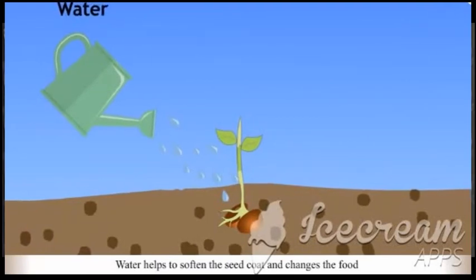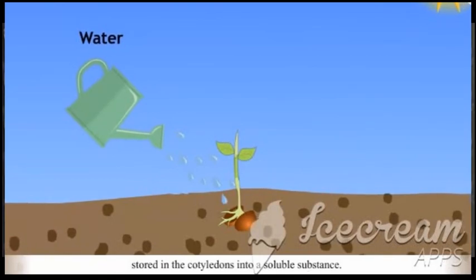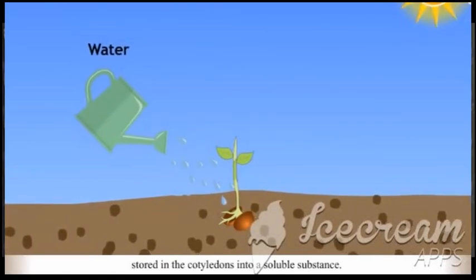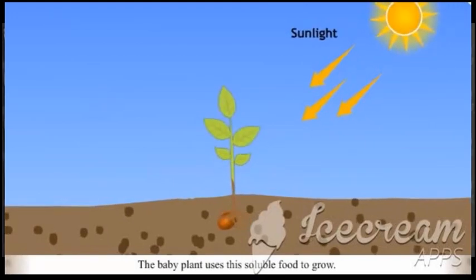Water helps to soften the seed coat and changes the food stored in the cotyledons into a soluble substance. The baby plant uses this soluble food to grow.